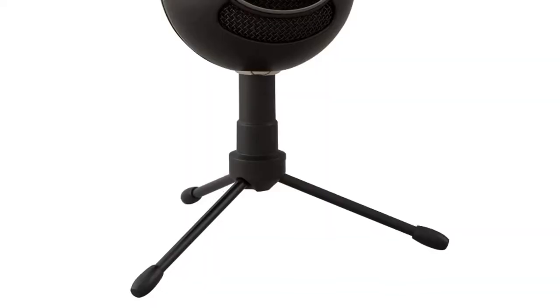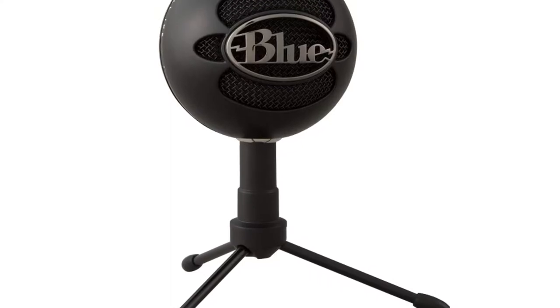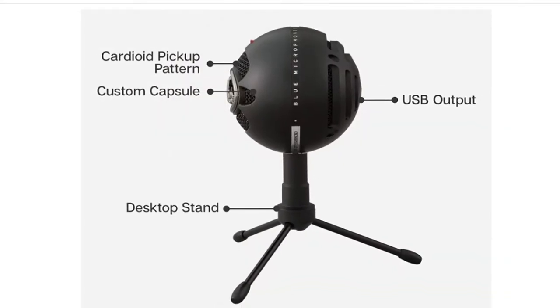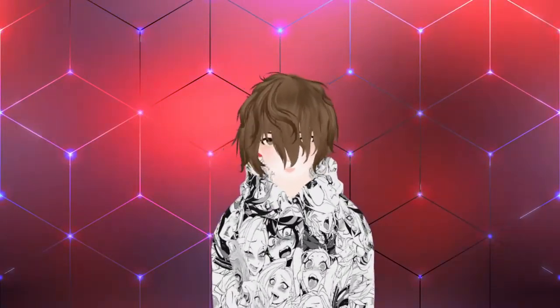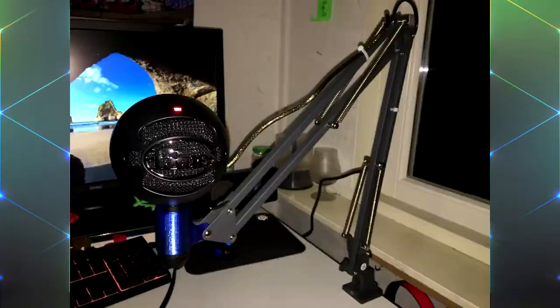My first budget VTubing microphone suggestion is the Blue Snowball. With an MSRP of $49.99, the Blue Snowball is a really good bang for your buck. It gives you nice, clear, crisp audio, and it's USB so you can plug it into any port on your computer — no special mixers or connectors needed. I do suggest mounting it on an arm that you can find on Amazon for around $30 to $40. Links are in the description below. Don't have it sitting on your desk — if you mount it, it will sound so much better.